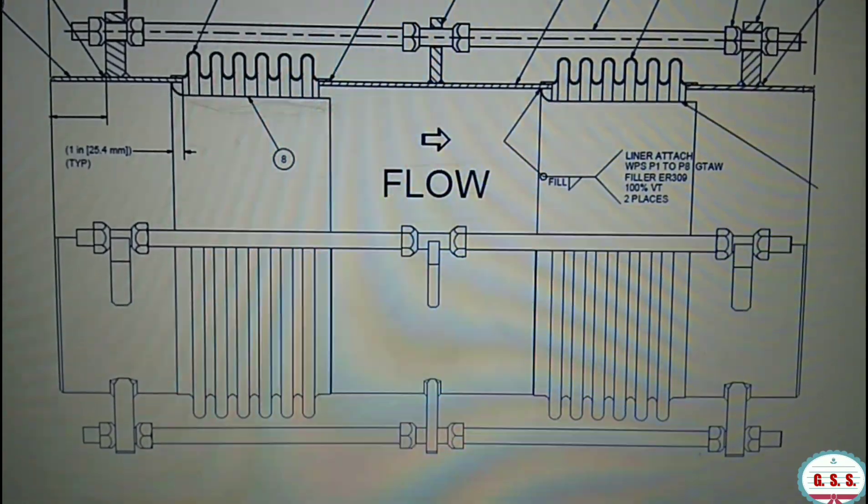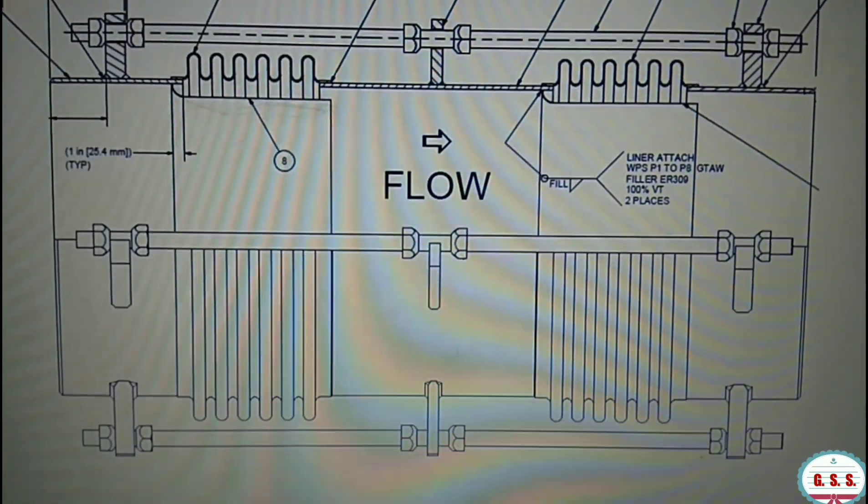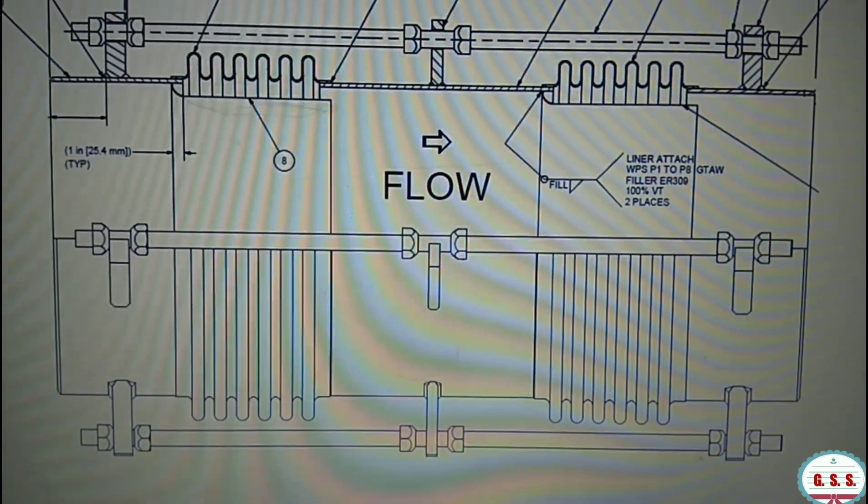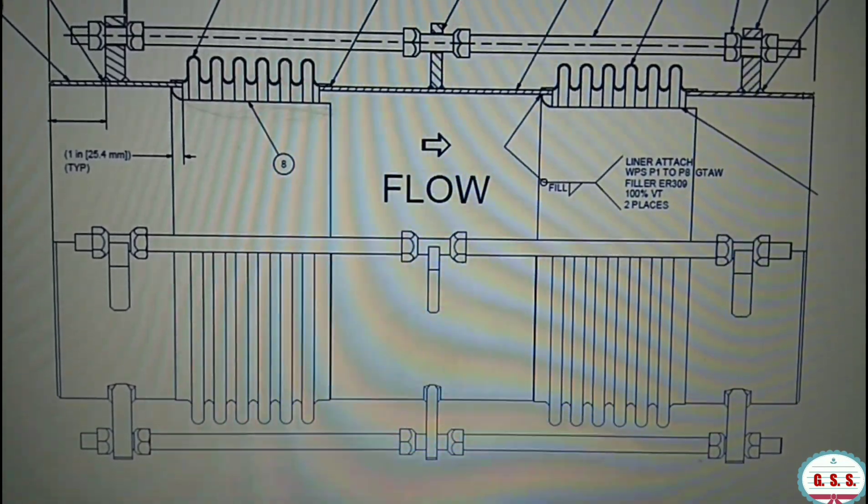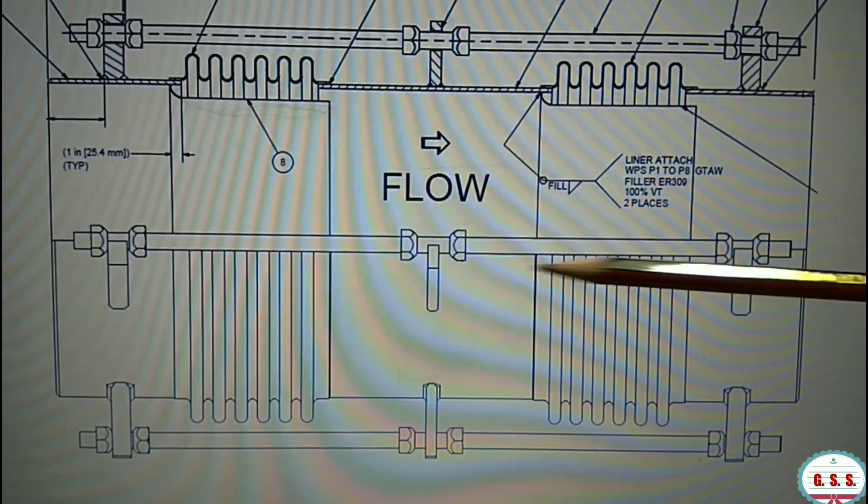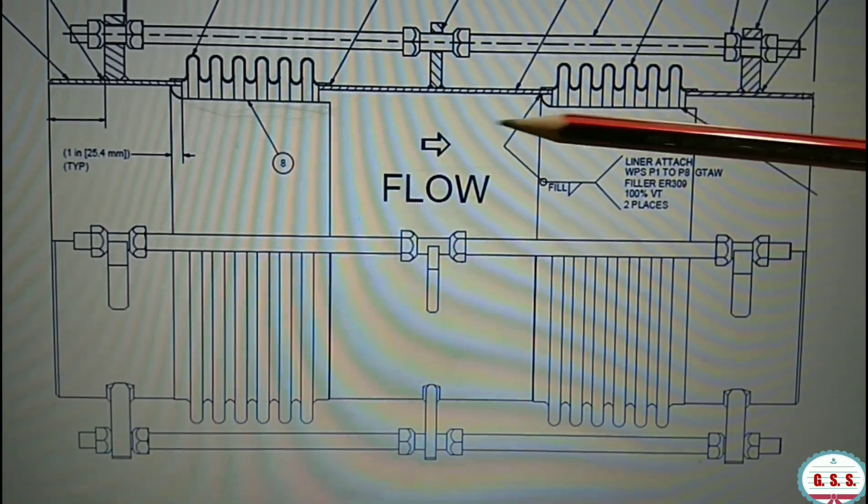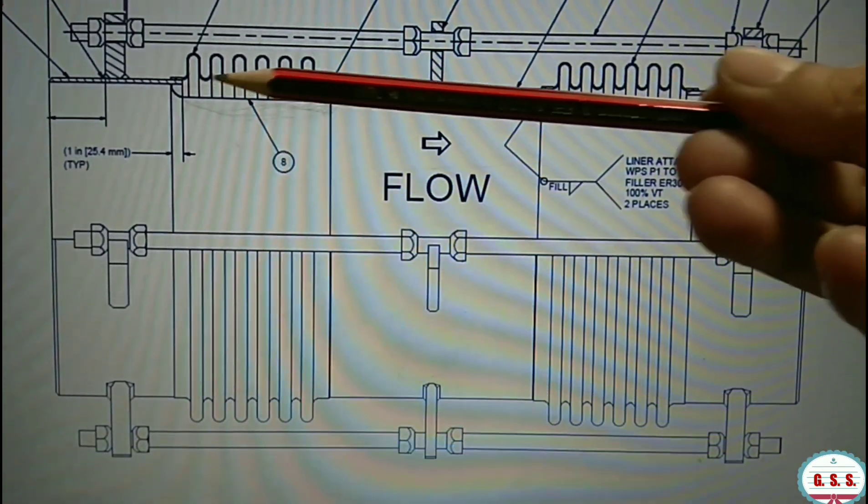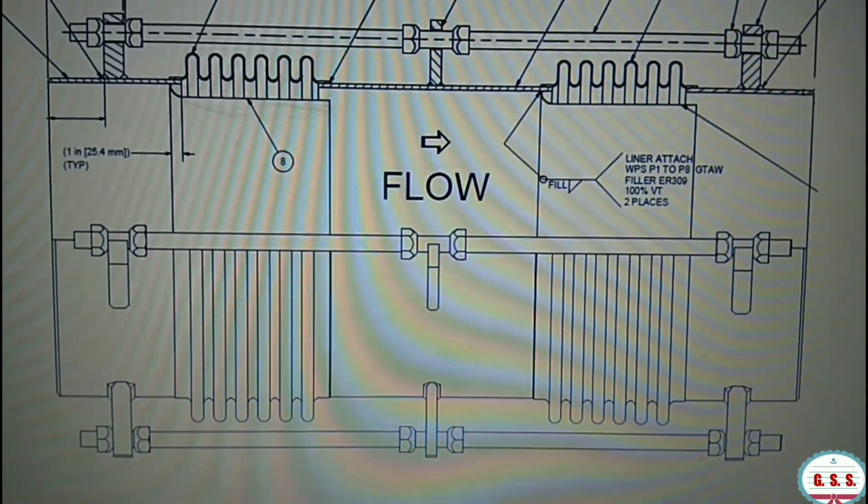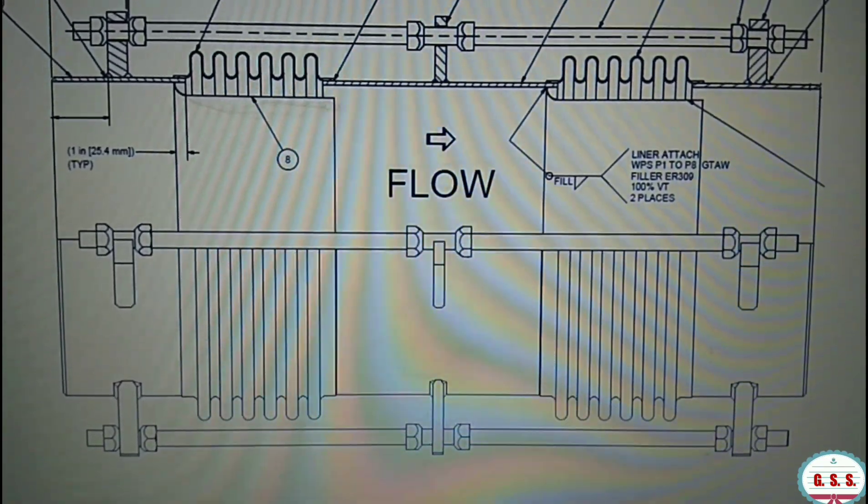That's why the bellows must be mounted as per flow direction indicated on the bellows. If the bellows is mounted in reverse direction, then flow will be from this direction and flow will directly hit the inner sleeve.